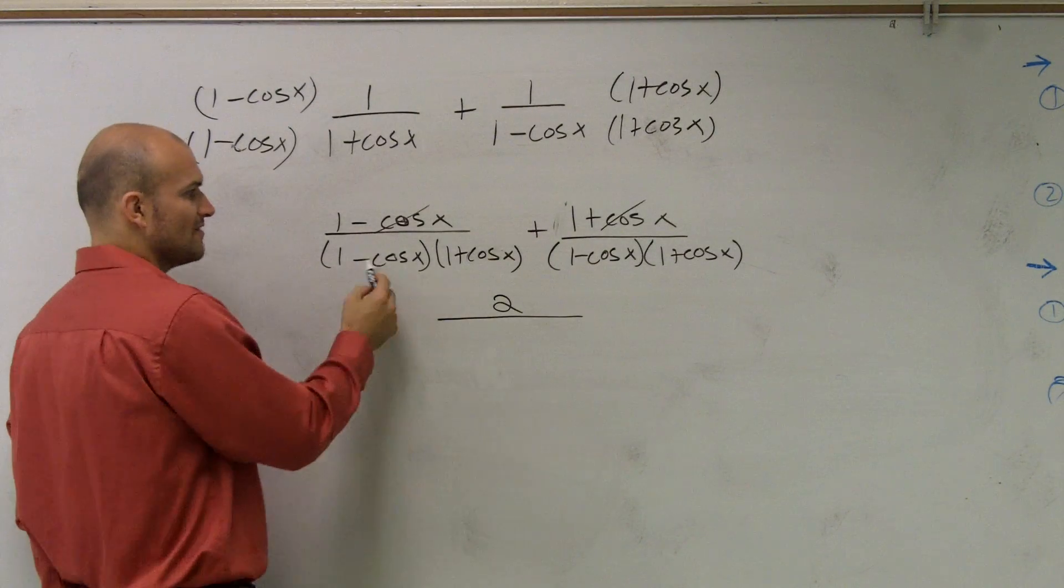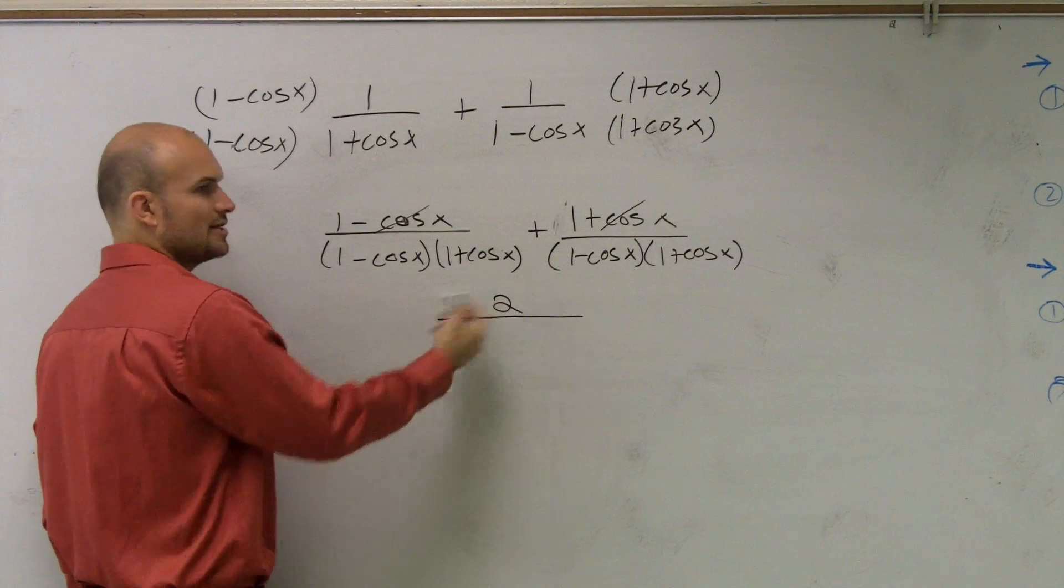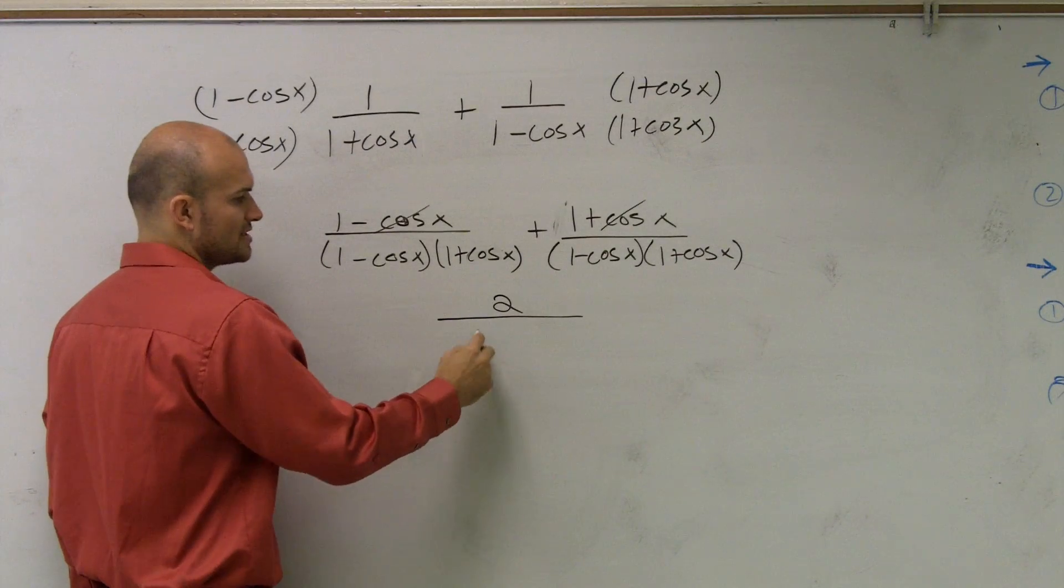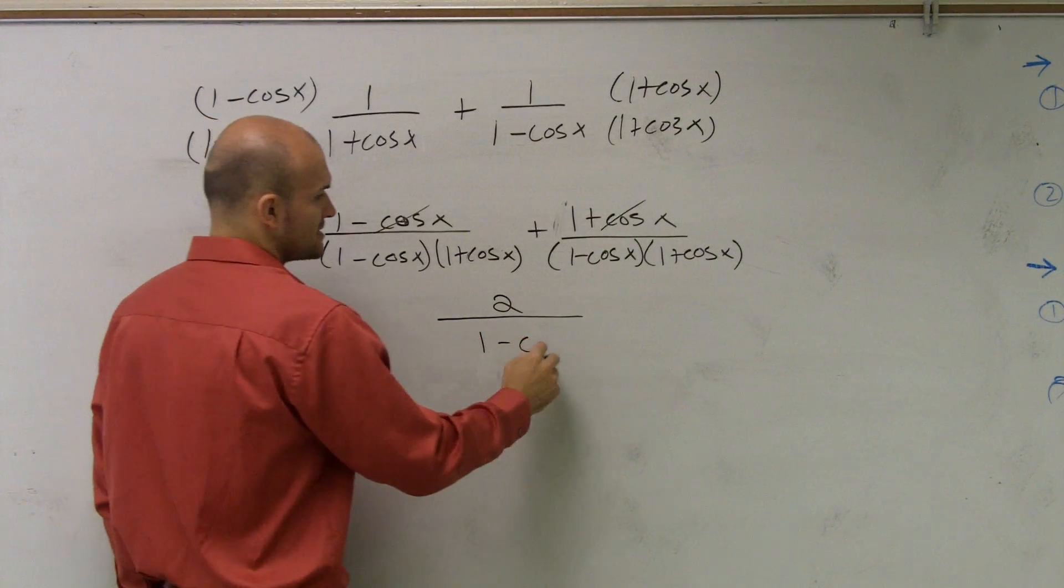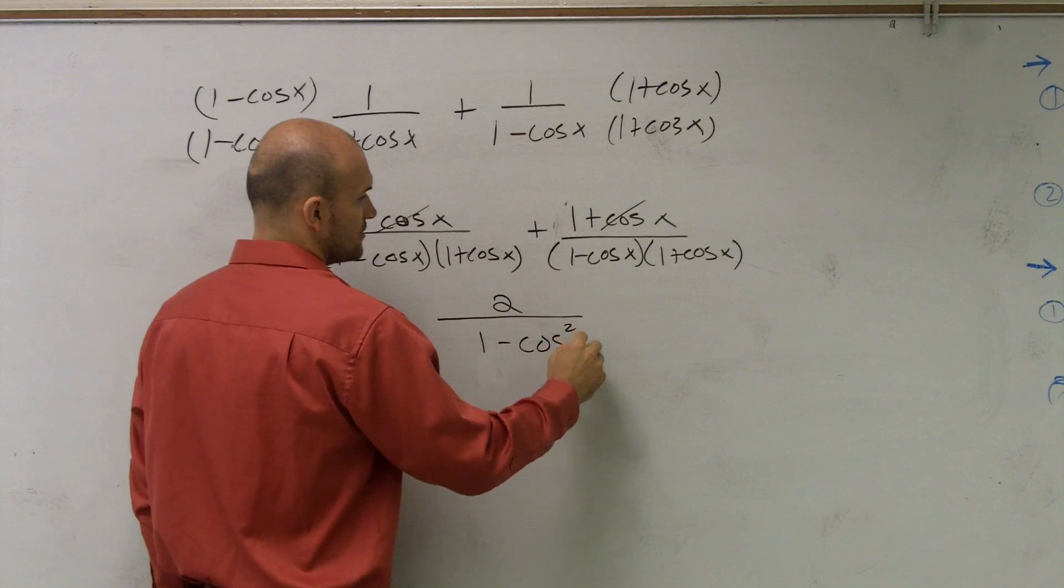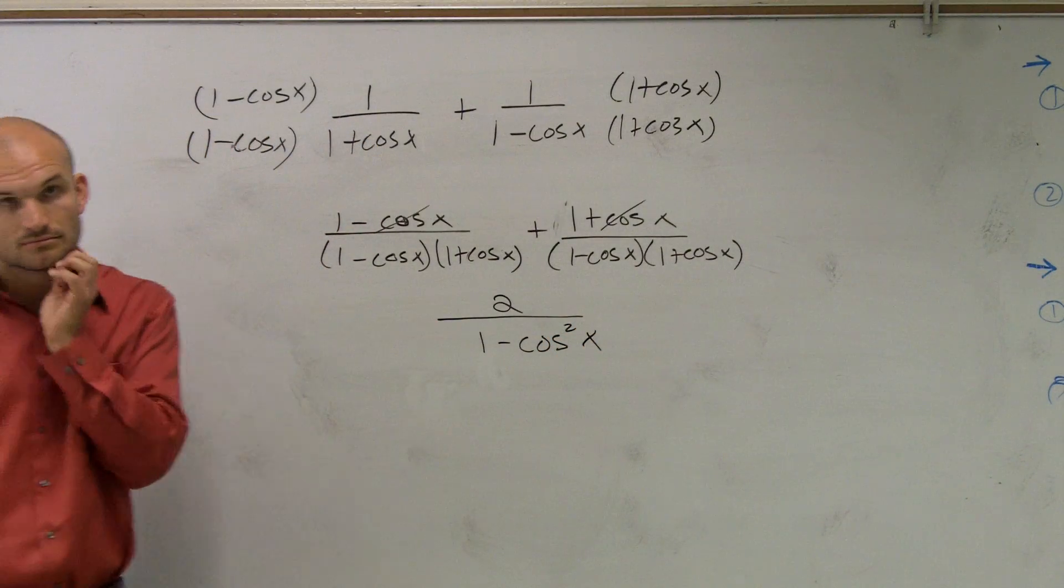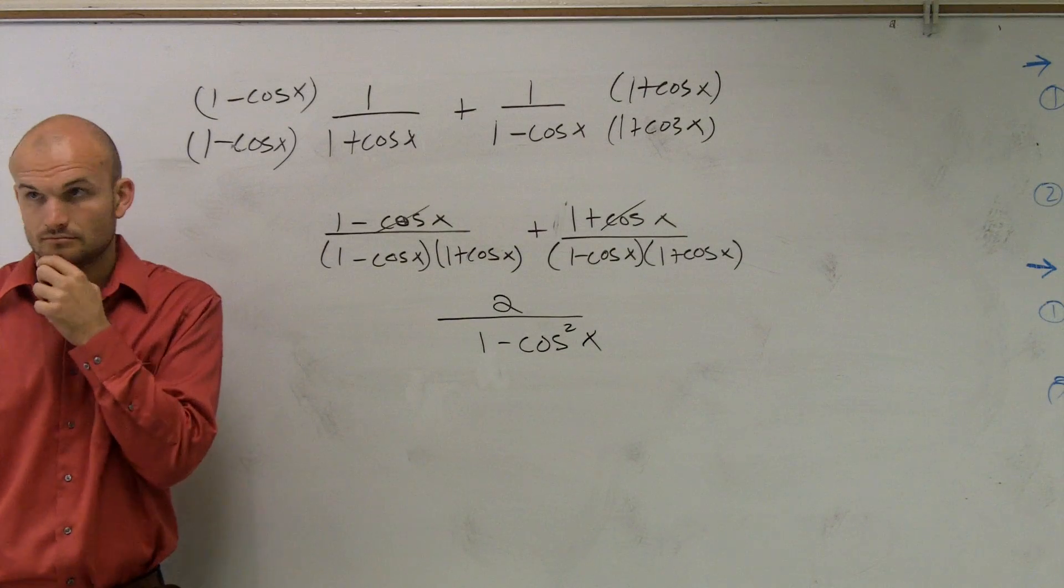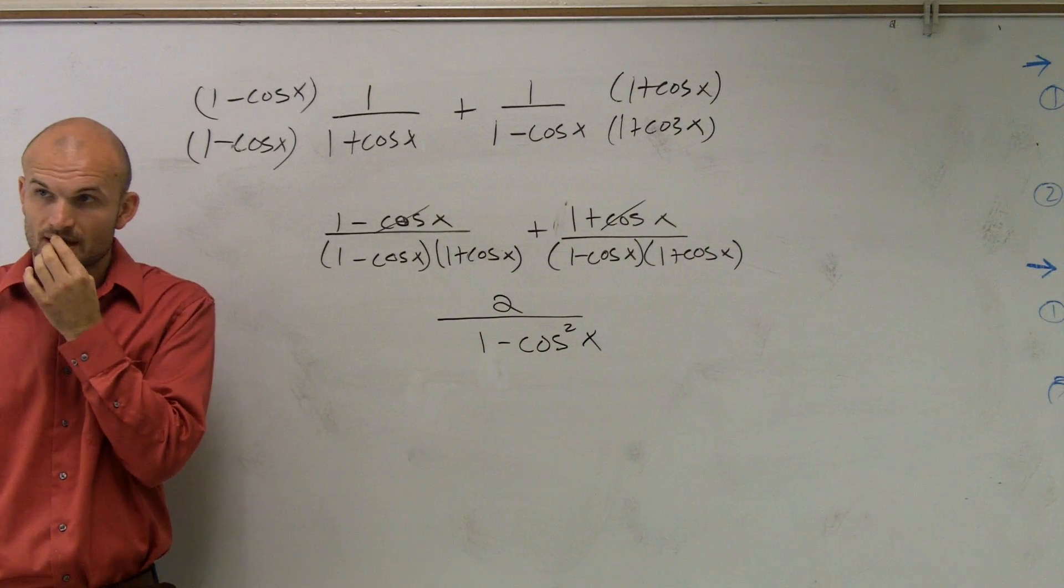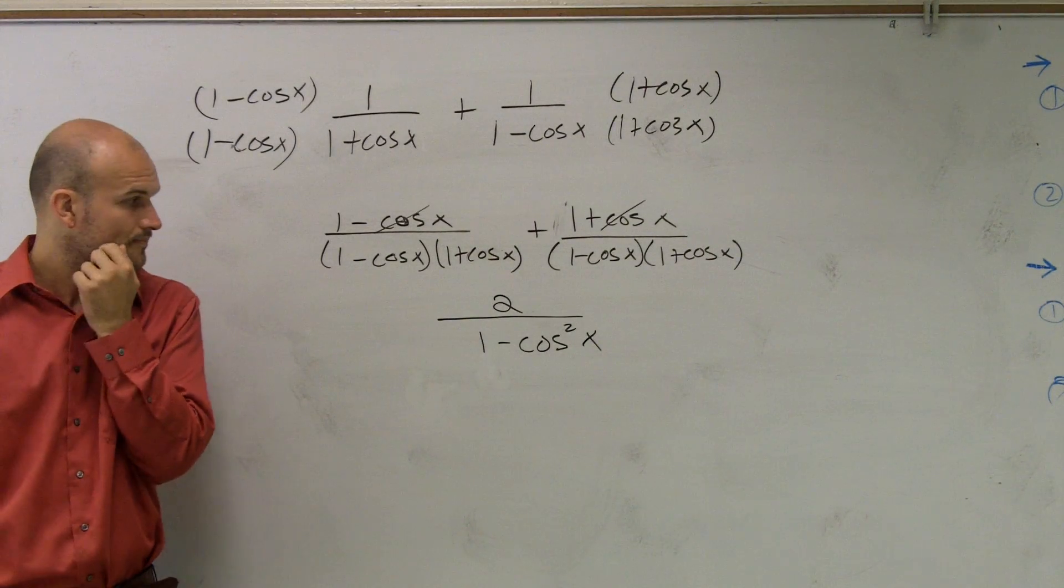And usually when you have a difference of two squares, you can get things to simplify out. So by multiplying this out, by using your FOIL technique, what you'll notice is you'll get 1 squared minus cosine squared of x, which is what? 2 over sine squared of x.